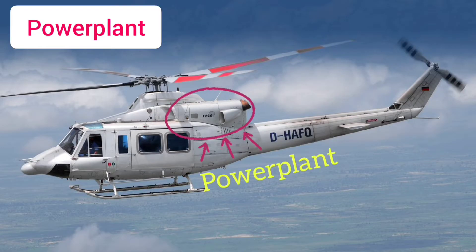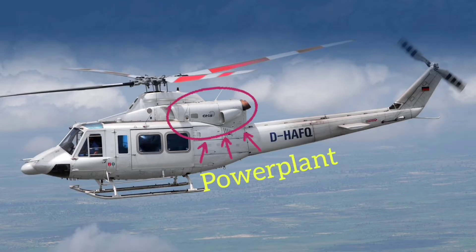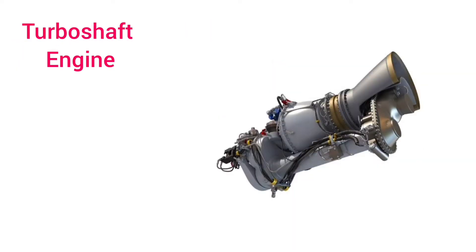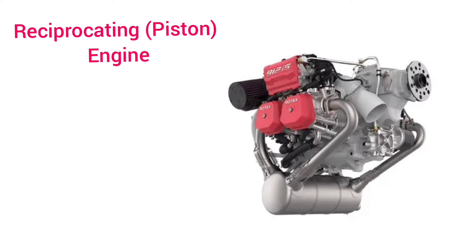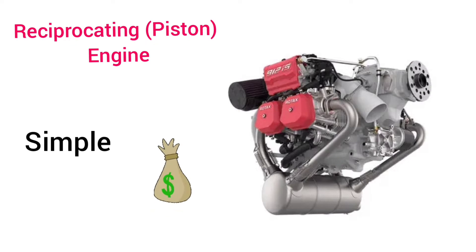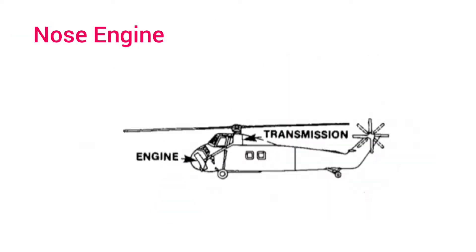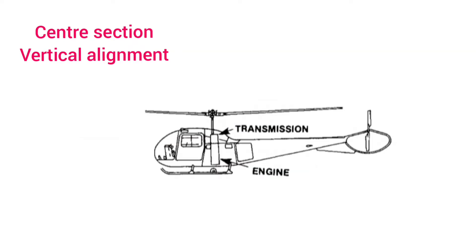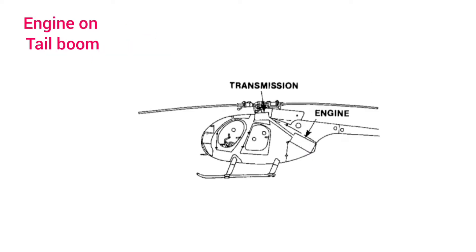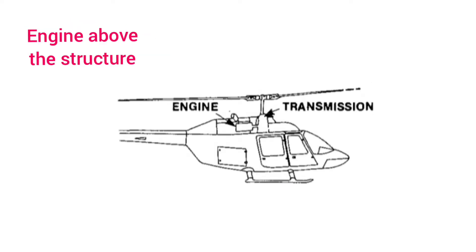Power plant. Helicopters use reciprocating and turboshaft engines as a power plant. Most often reciprocating engines are used because they are simple and inexpensive. Engines can be placed in the nose section, in the center section with horizontal or vertical alignment, or in the tail boom, or above the surface structure of the helicopter.